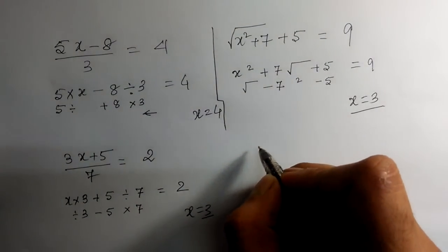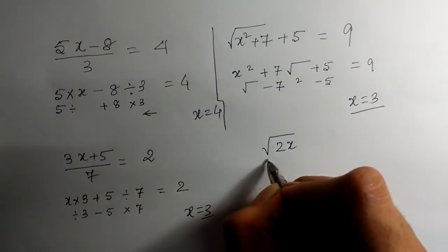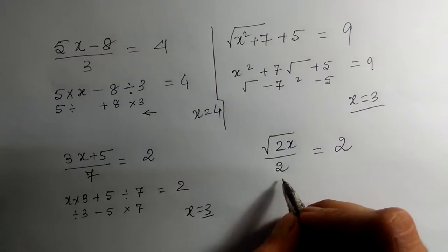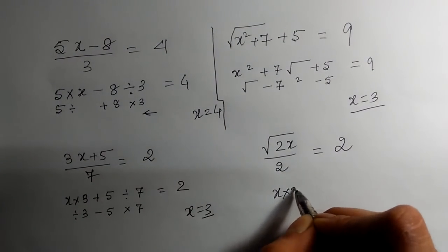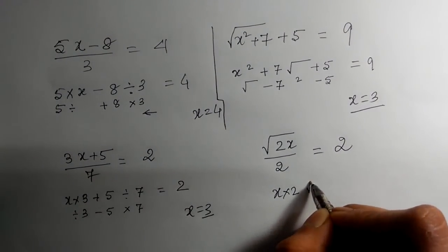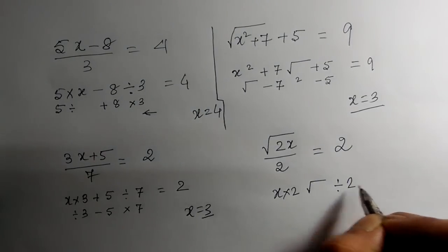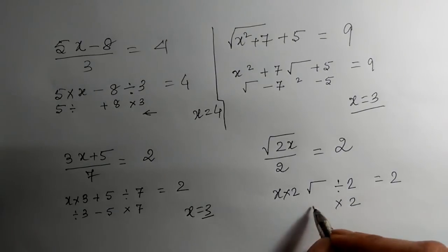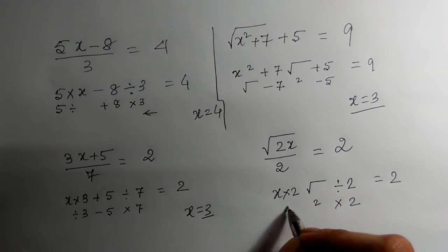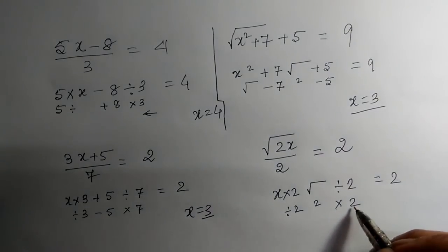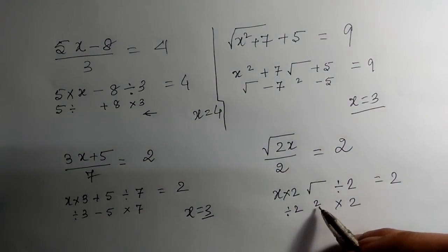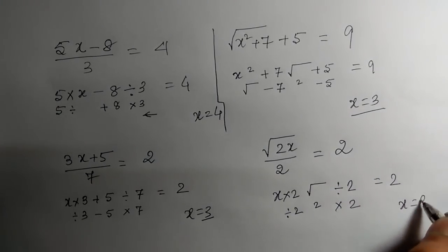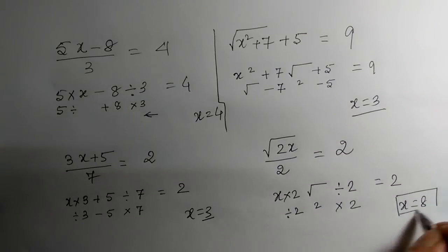Let us take another example: √(2x) / 2 = 2. The operations are: x times 2, then under root, then divided by 2. To reverse: multiply by 2, then square, then divide by 2. So 2 × 2 = 4, 4 squared is 16, 16 divided by 2 is 8. So x = 8.